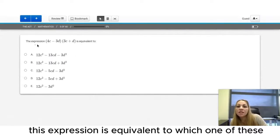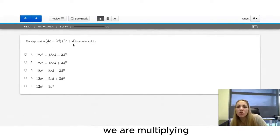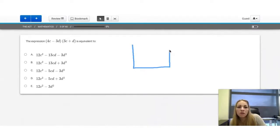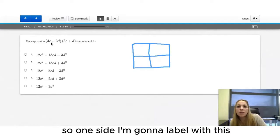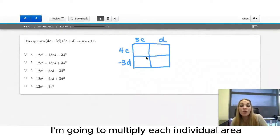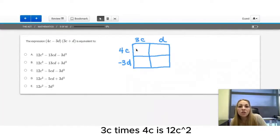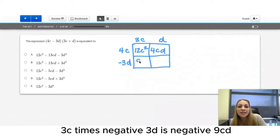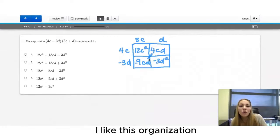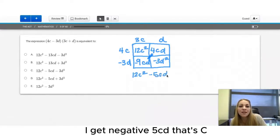Question number 5. This expression is equivalent to which one of these? In this case, we are multiplying two binomials or things that have two terms in them. A nice way to organize this work is with a generic rectangle. We can label both of our sides. So one side I'm going to label with this and one side I'm going to label with this. I'm going to multiply each individual area. 3C times 4C is 12C squared. 4C times D is 4CD. 3C times negative 3D is negative 9CD. And D times negative 3D is negative 3D squared. I like this organization because we can combine like terms right here. We have 12C squared. Add those two together, I get negative 5CD. That's C.